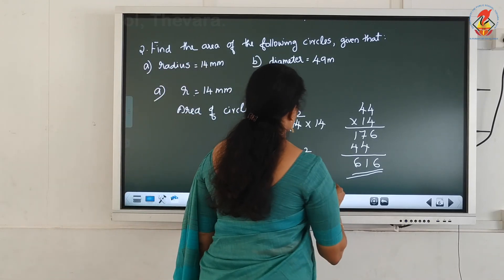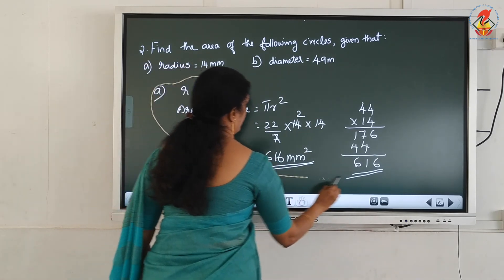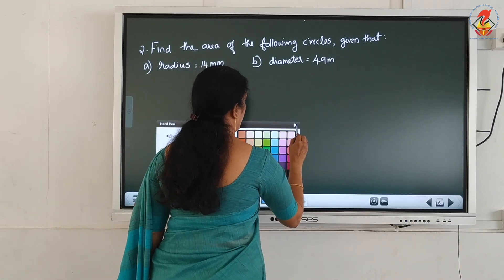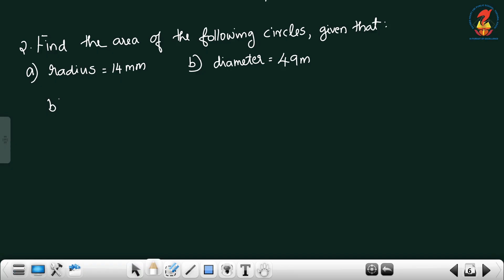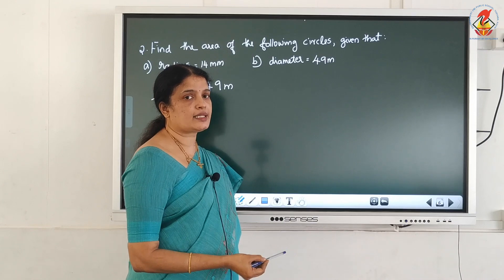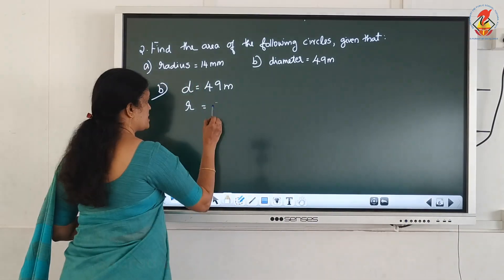Next, diameter is already given. Diameter d equals 49 meter. To find the radius: radius equals half of diameter, that means d by 2.